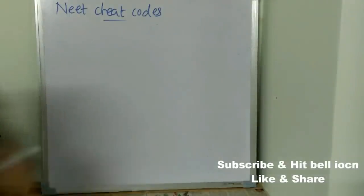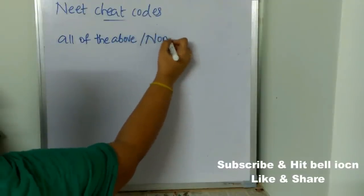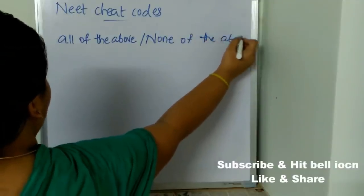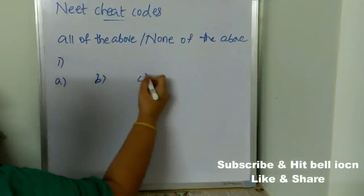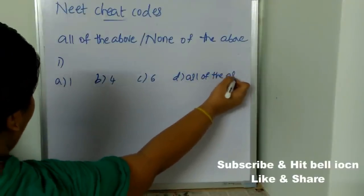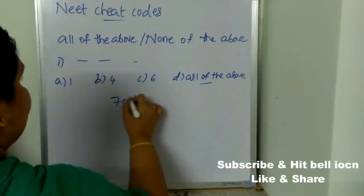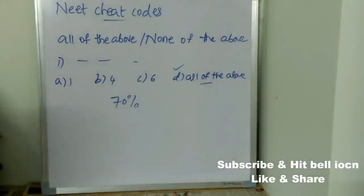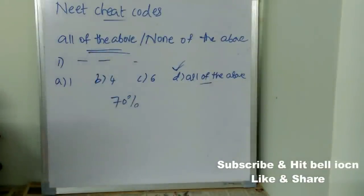Cheat Code 3: 'All of the above' or 'None of the above.' For example, if options are 1, 4, 6, and 'All of the above,' and you don't know the correct answer, there is a 70% chance that 'All of the above' is the correct answer. Go for it in that situation.